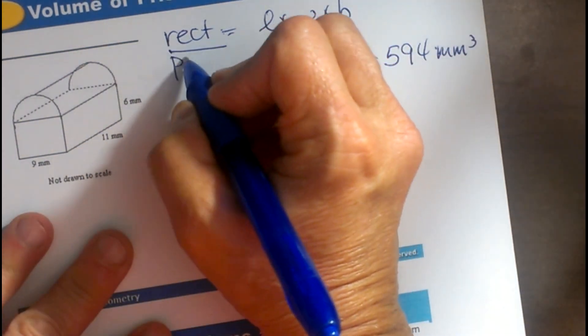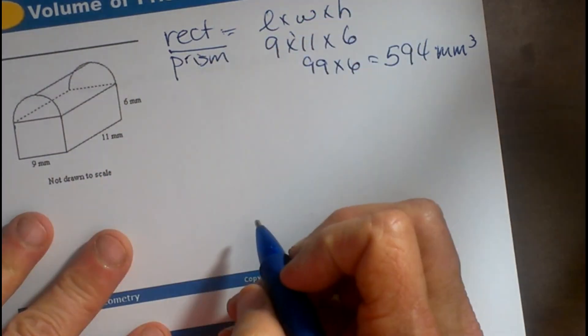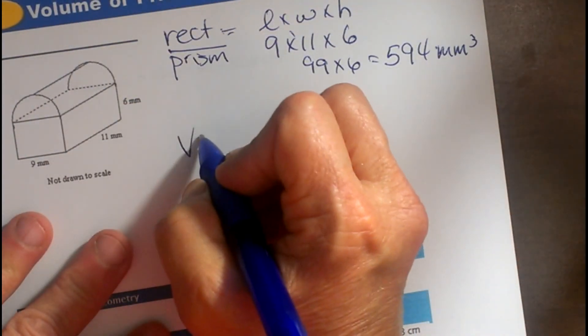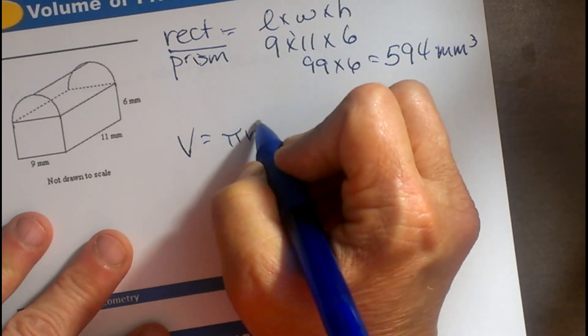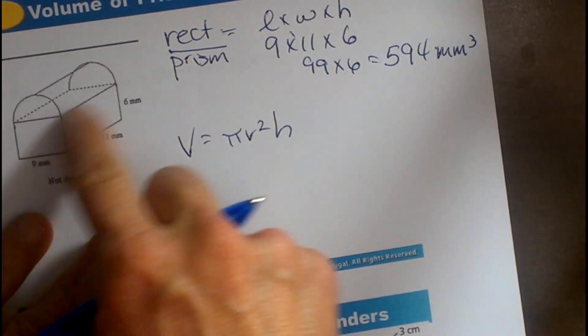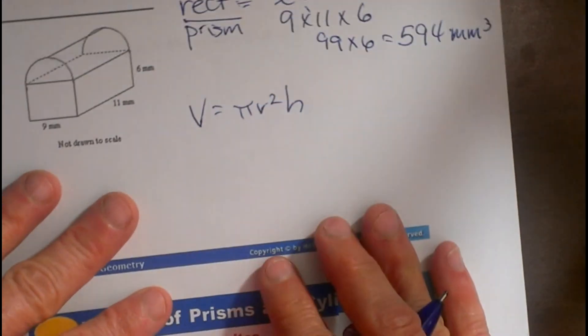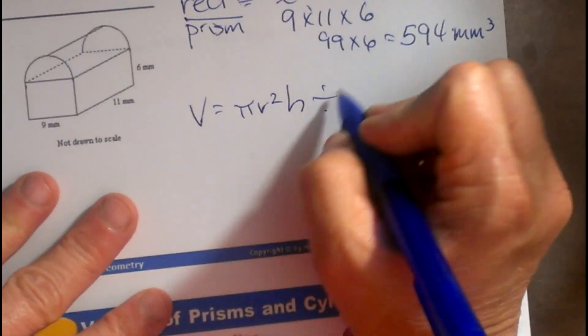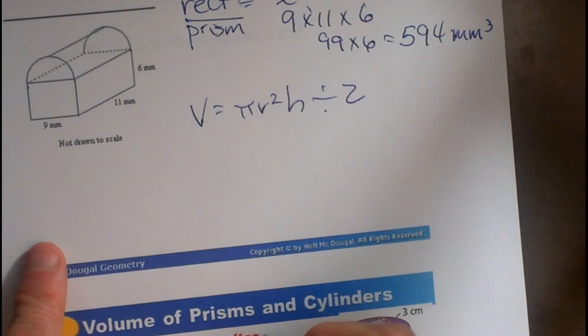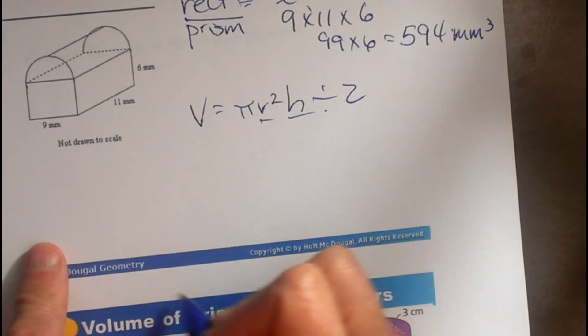So that part's easy, the rectangular prism. Now let's look at the cylinder. A cylinder's volume is pi r squared times height. But what are we going to do with that cylinder since we only have half of it? We're going to divide it by 2.